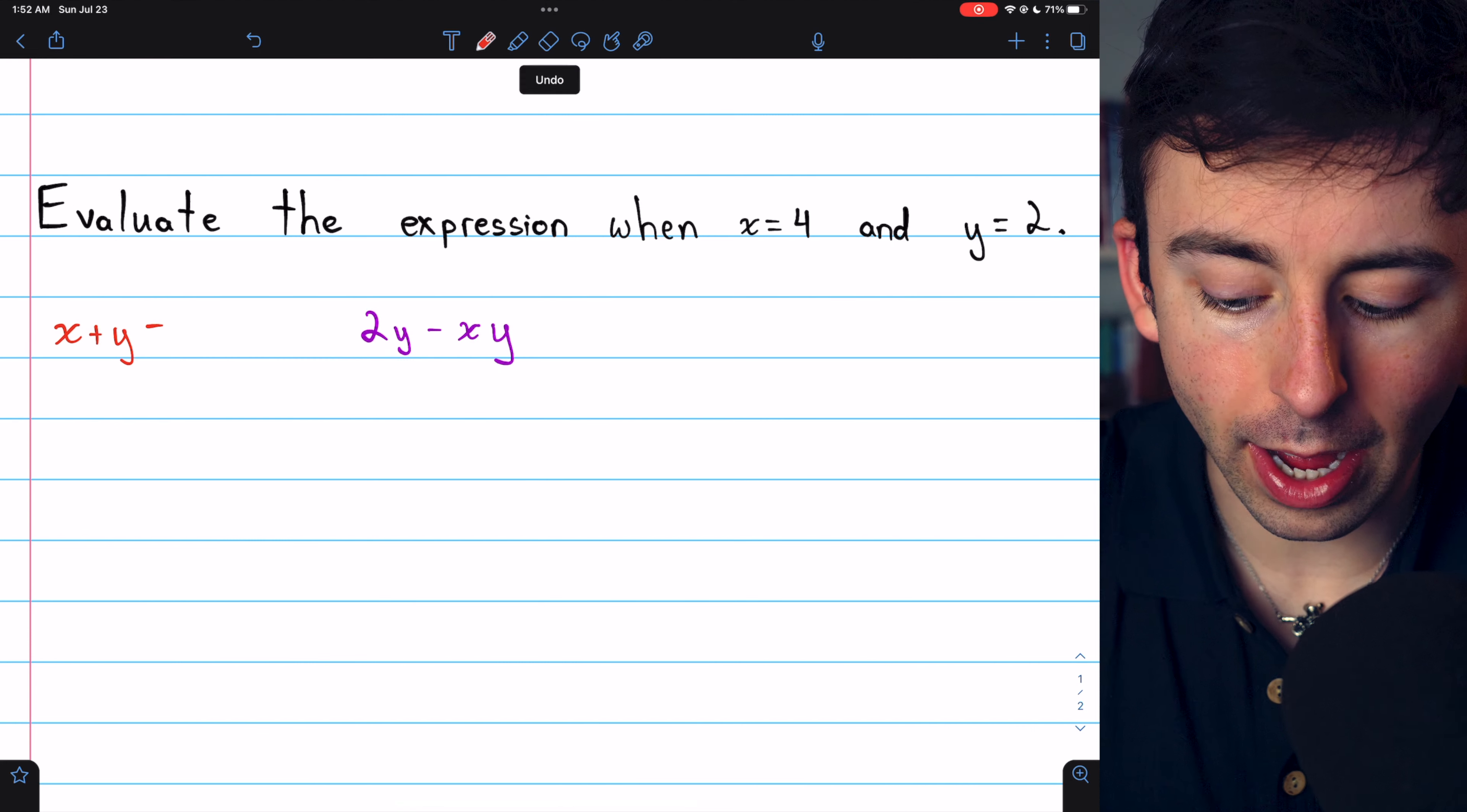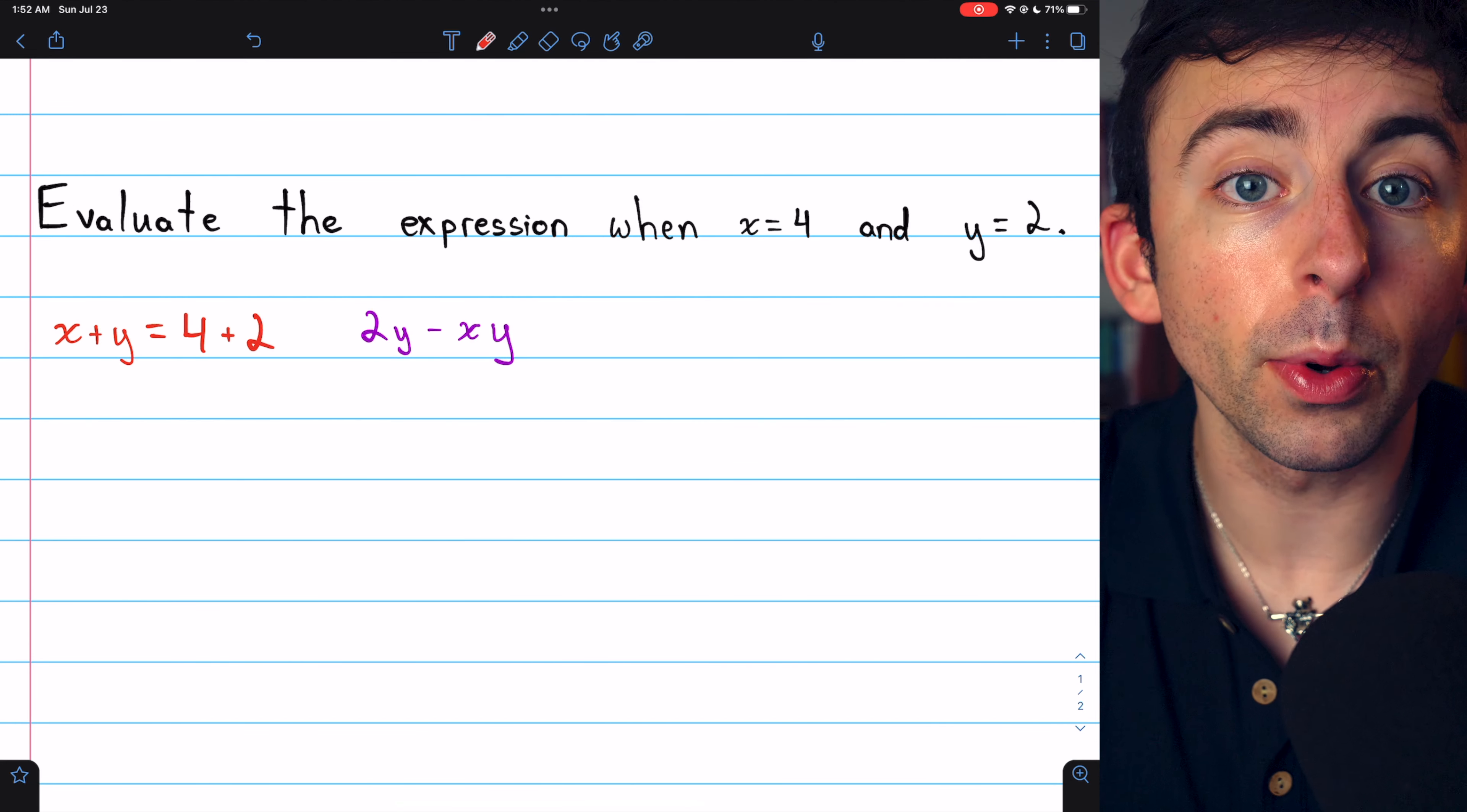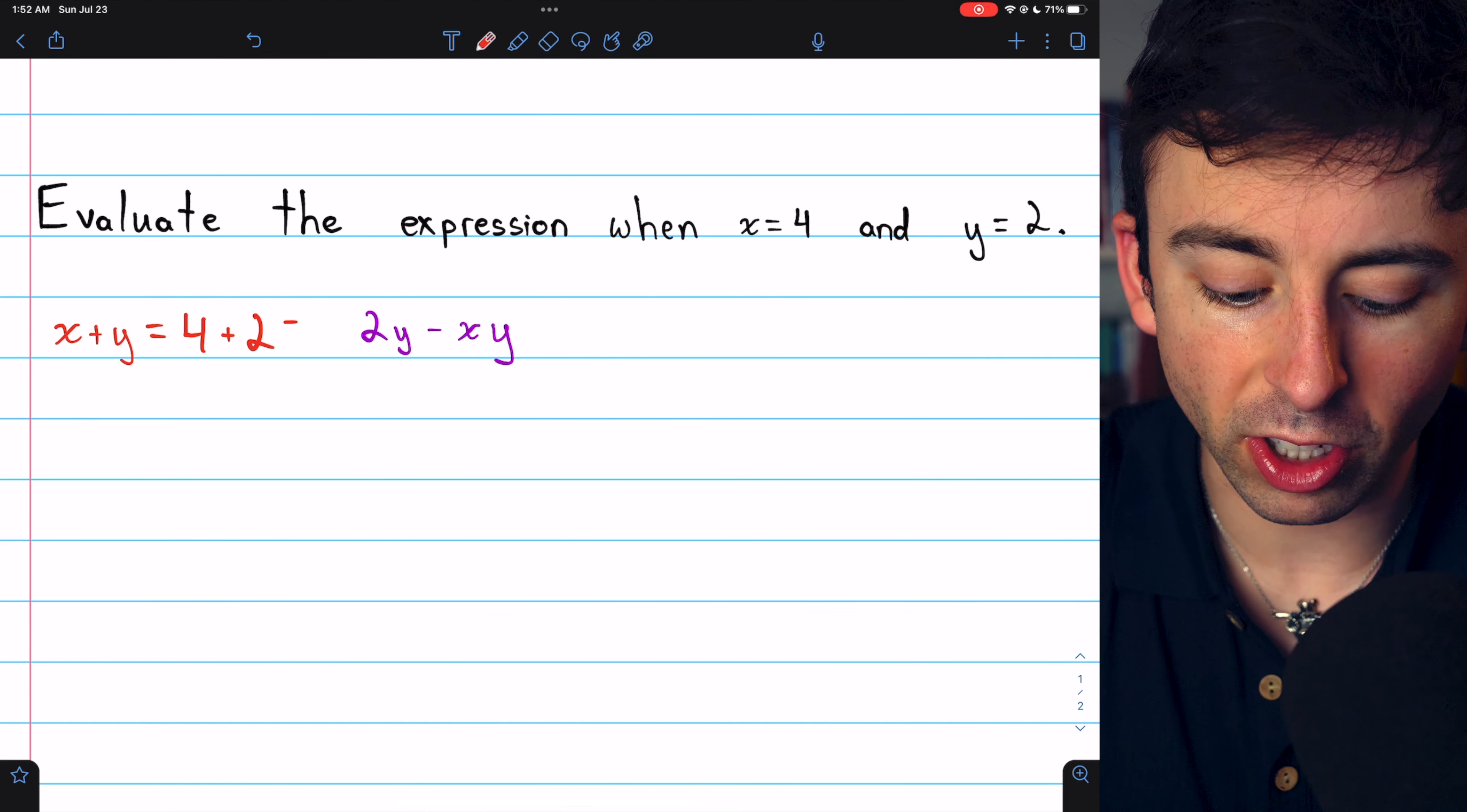So what is x plus y? Well, x is 4 and y is 2, so it's 4 plus 2, which is 6.